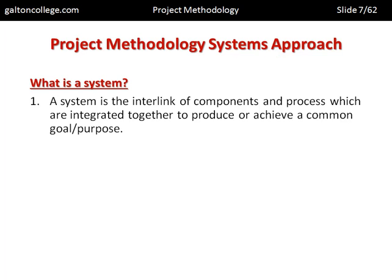What is a system? A system is the interlink of components and processes which are integrated together to produce or achieve a common goal or purpose. The system is the interlinkages — the ways in which the various components and processes are linked. When the project manager has seen what's required and the various inputs, a system can be imagined. The project is a system: it has a starting point, an end point, inputs, functions that must be performed, and shows how the various components are all linked together.